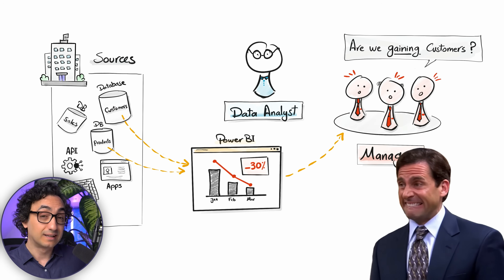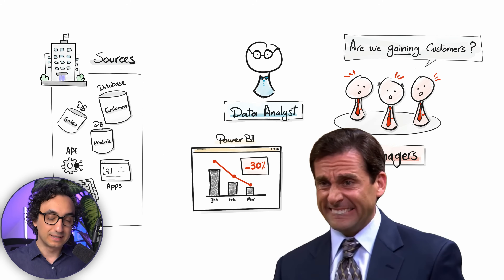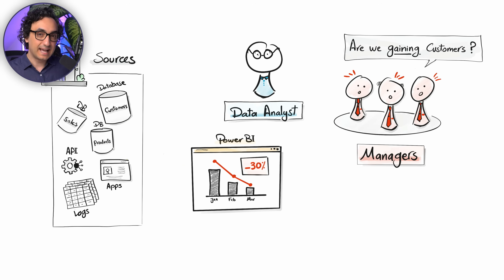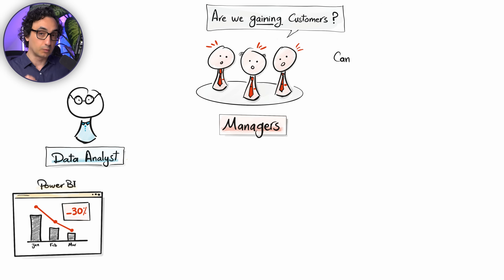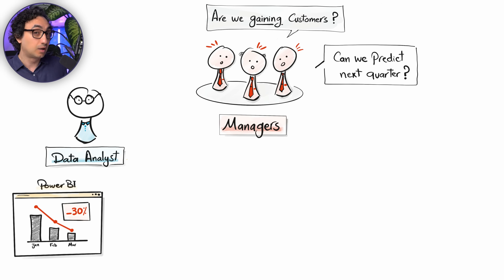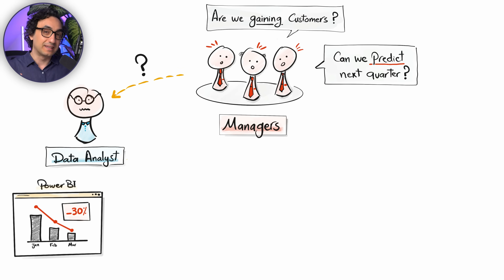Once everything is ready, the data analyst presents the results to the business users — and now this scares everyone. The trend is going down: we are losing customers in the last three months. Everyone starts to panic. Then one of the managers asks a very important question: can we predict how many customers are going to leave in the future, so we can take action to prevent that?